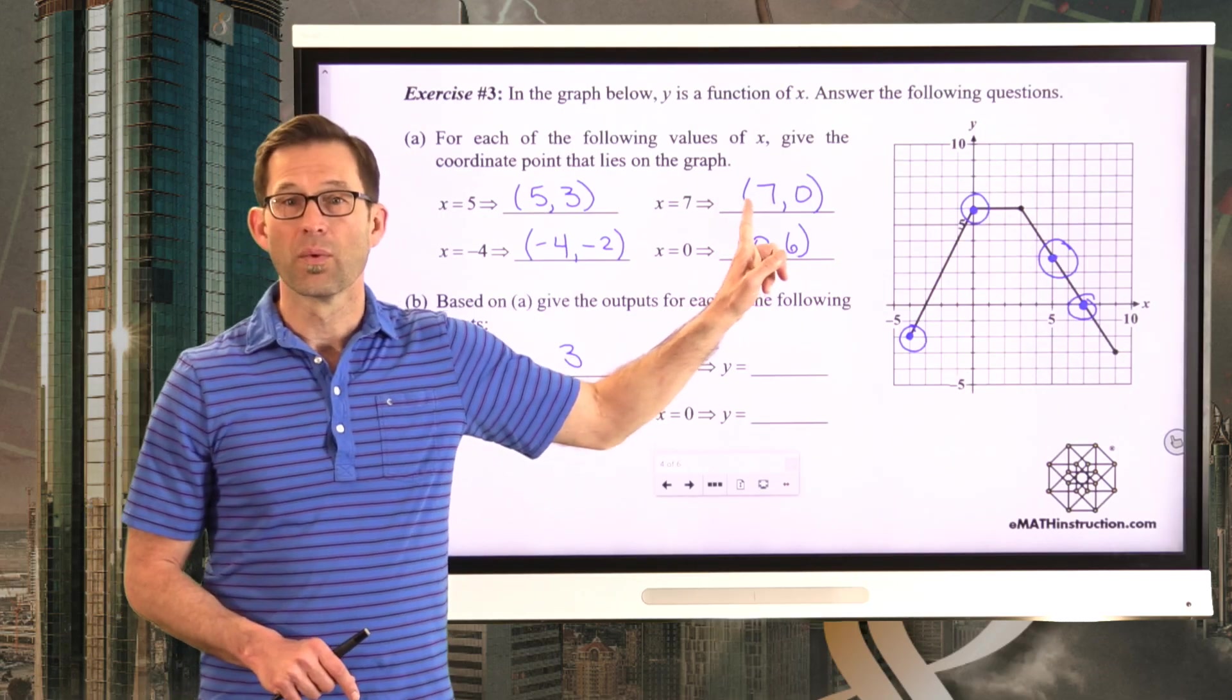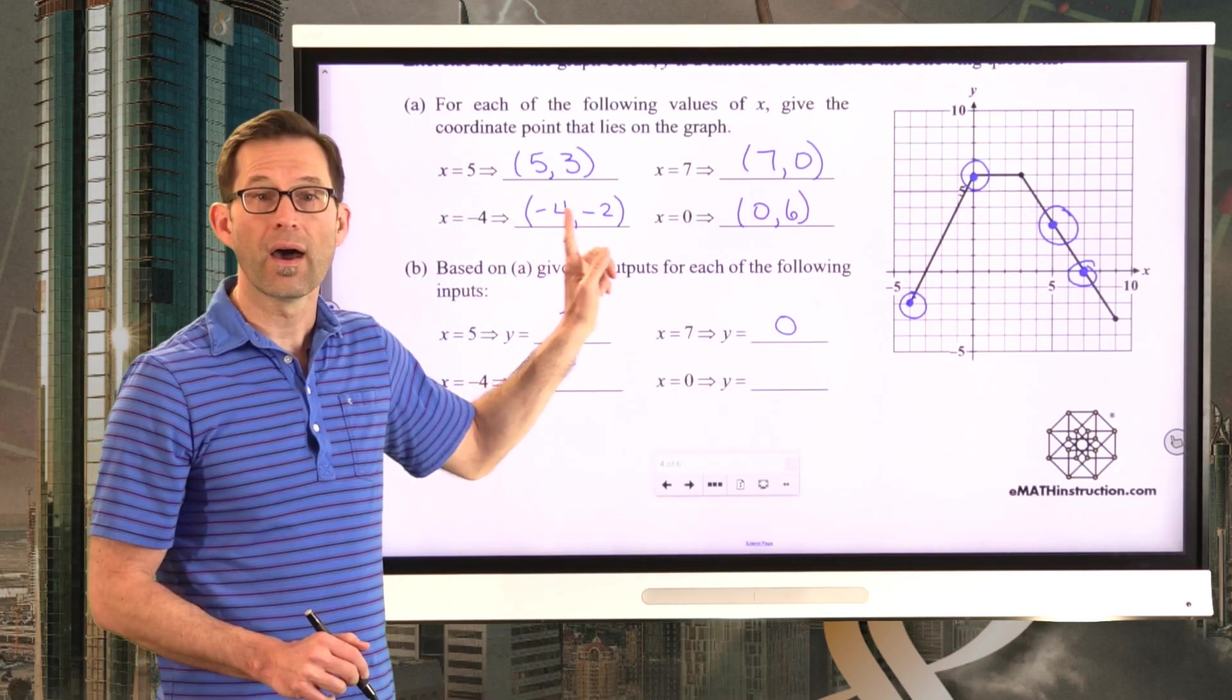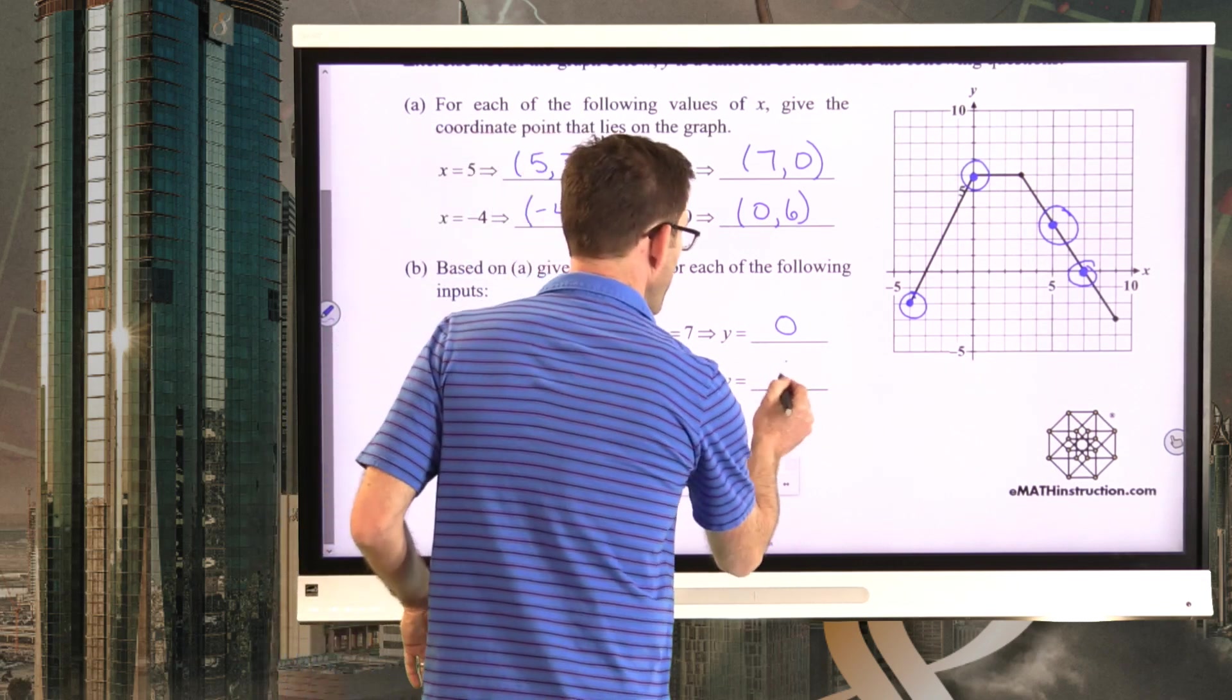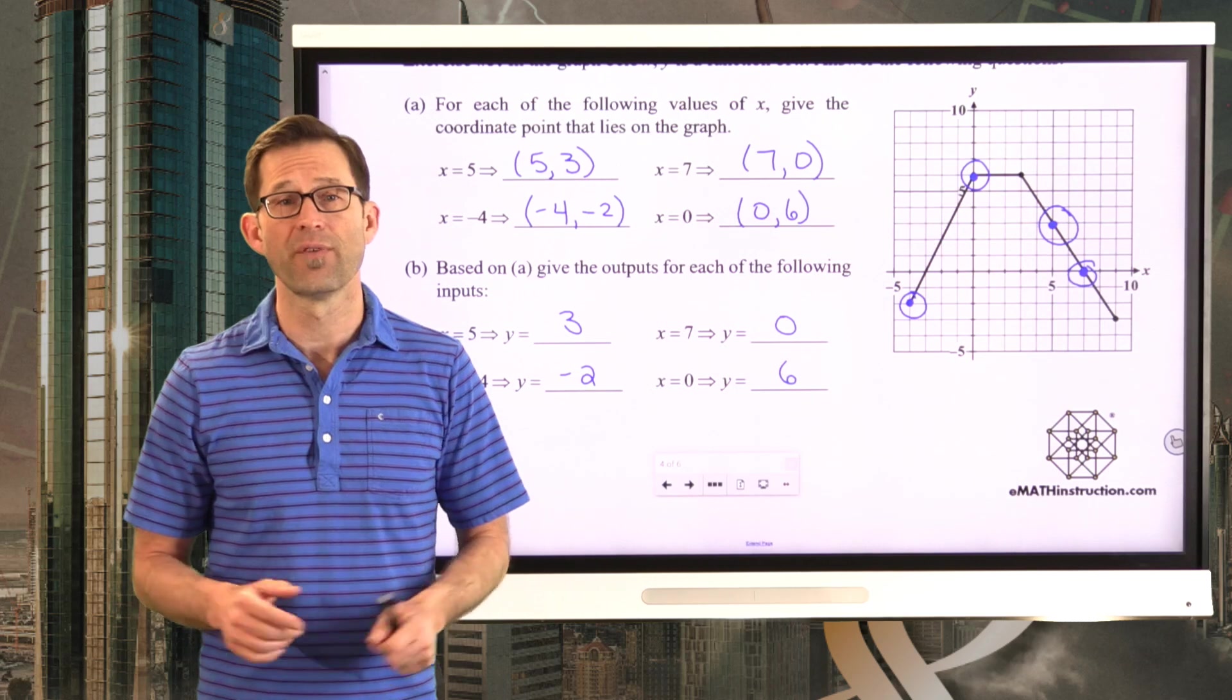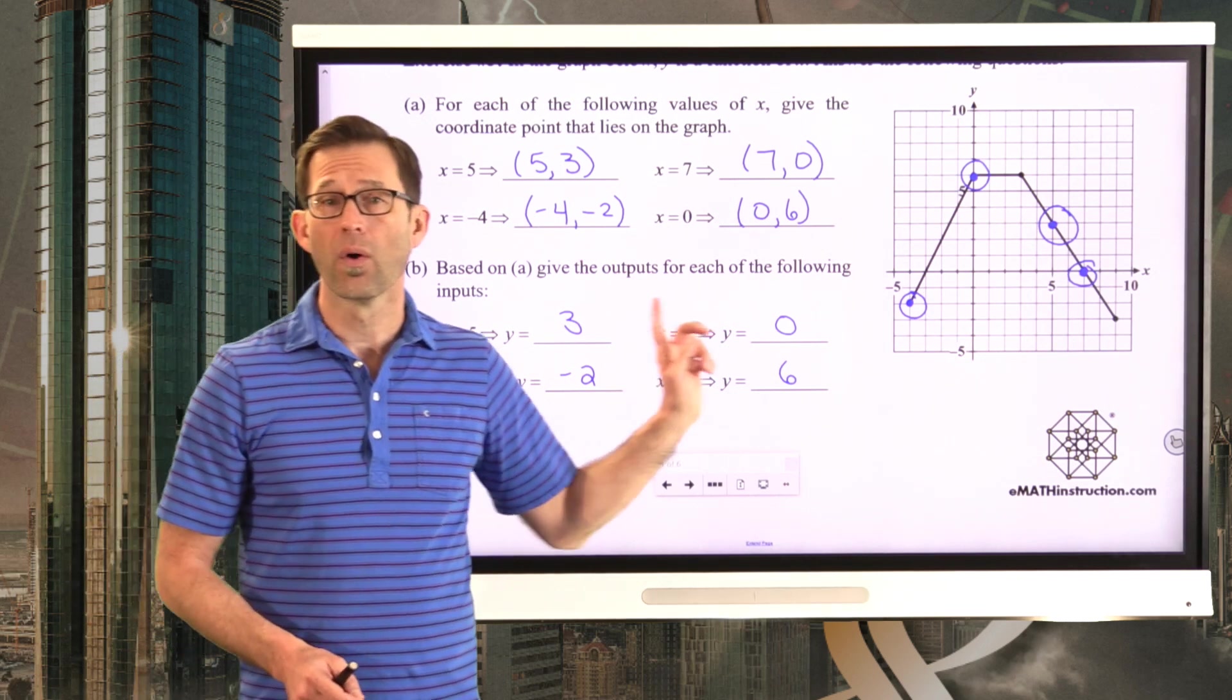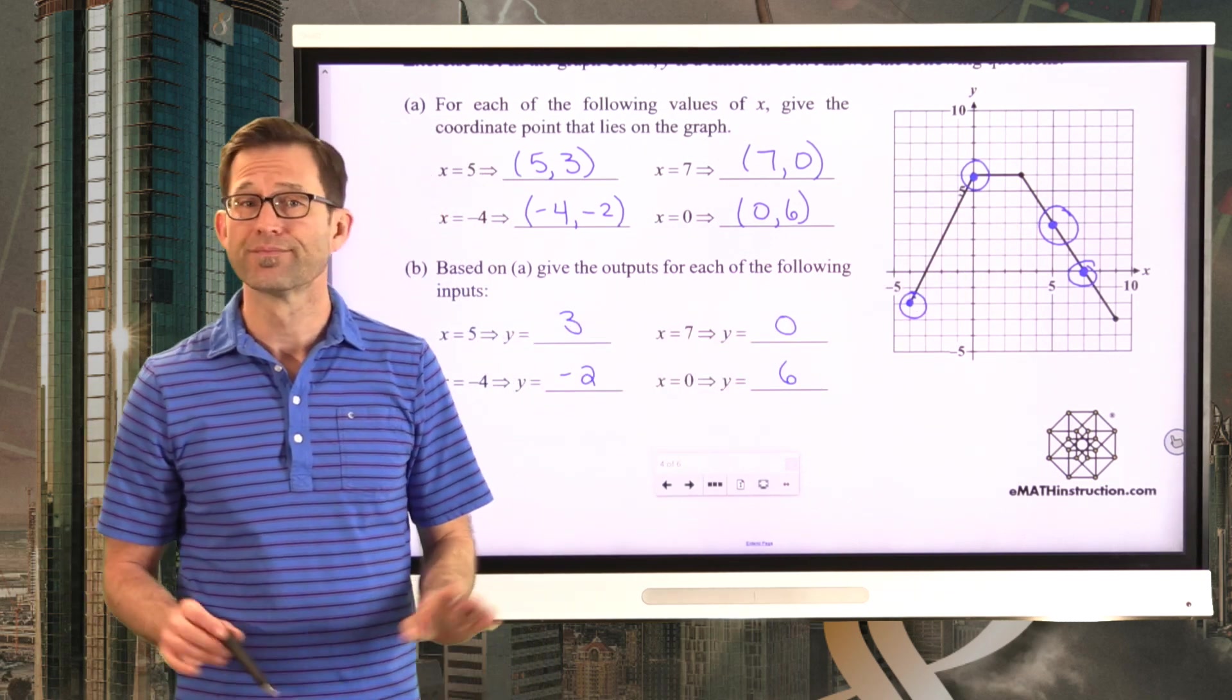All right. Well, when x is equal to 7, the output is 0. Y equals 0. When x is equal to negative 4, the output is y equals negative 2. When x is equal to 0, the output is y equals 6. So really, when we use a graph to evaluate the outputs of a function, given a function's input, it's really nice. Because all we do is we take the input, which is the x value. We go along on the graph, find that x value, go up, figure out what the y value is for that x value, and that's the output. As simple as that.